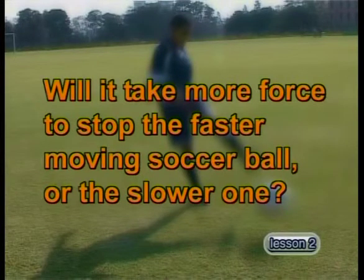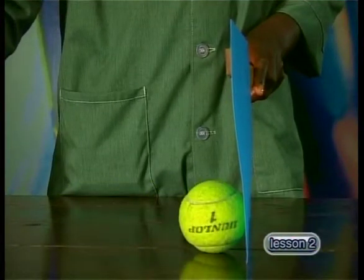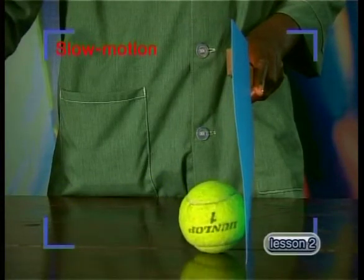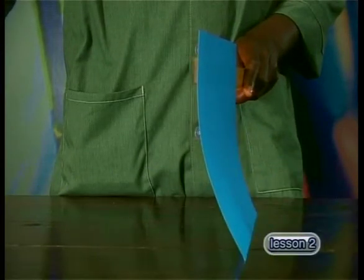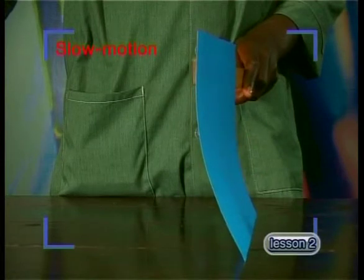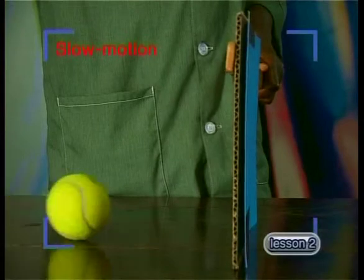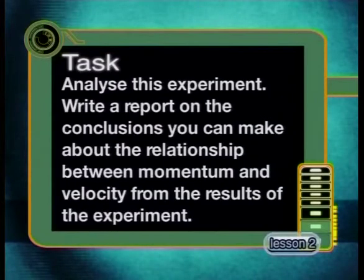The other question is: will it take more force to stop a faster-moving soccer ball or a slower one? In a demonstration, a slow-moving ball rolling towards a thin piece of cardboard comes to a stop when it hits the cardboard. A faster-moving ball does not stop when it hits the same cardboard, but does stop when a thicker piece is used. Analyse this experiment and write a report on the conclusions you can make about the relationship between momentum and velocity. We will look at the answer at the beginning of our next lesson.